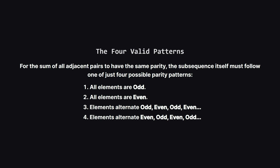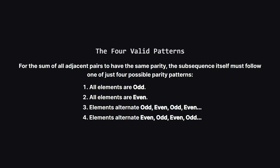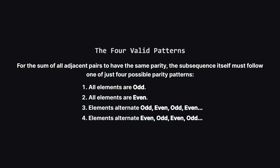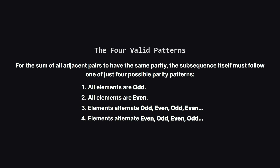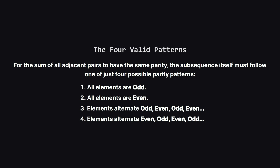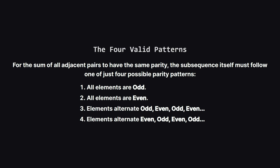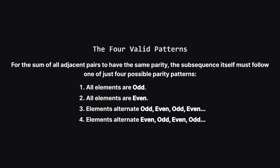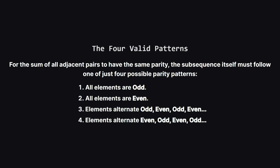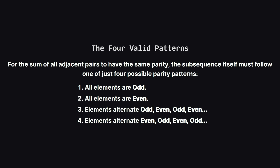First, a sequence of all odd numbers — odd plus odd is even, so all sums in that sequence will be even. Second, a sequence of all even numbers — again, all sums will be even. Third, a sequence that alternates between odd and even numbers — in this case, every sum will be odd. And finally, a sequence that alternates even, then odd, then even — where again, every sum will be odd.